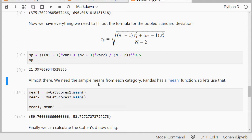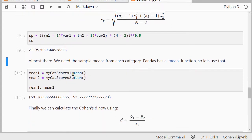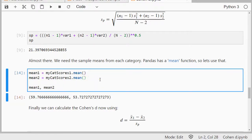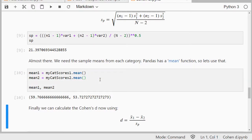Then we're almost there. Then we need to calculate the means, where we can simply use pandas mean function, so dot mean, and that gives me the mean of each of the two scores.